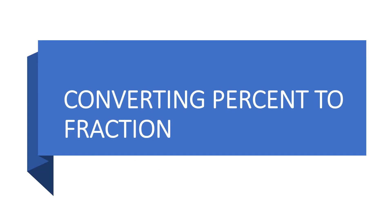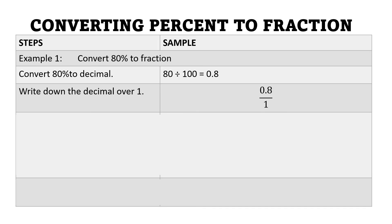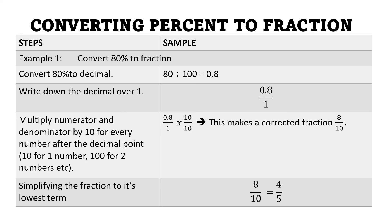Now let's convert percent to fraction. Convert 80% to a fraction. We divide 80 by 100, then write down the decimal over 1. We multiply our numerator and denominator by 10, which gives us 8 over 10. Then we simplify this fraction to lowest terms: 8 over 10 is equal to 4 over 5.